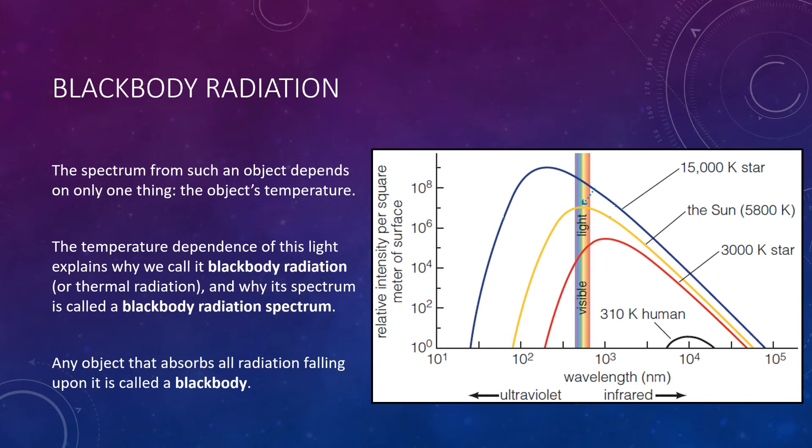Most importantly, the spectrum from such an object depends on only one thing: the object's temperature. Temperature represents the average energy of atoms or molecules in an object. Because the randomly bouncing photons interact so many times with those atoms and molecules, they end up with energies that match the object's temperature, regardless of what the object is made of. This temperature dependence is why we call this light thermal radiation, or blackbody radiation, and its spectrum is called a blackbody radiation spectrum. Any object that absorbs all radiation falling upon it is known as a blackbody. Almost all familiar objects — including the sun, planets, rocks, and even humans — emit light that approximates blackbody radiation.